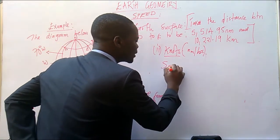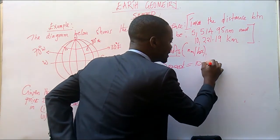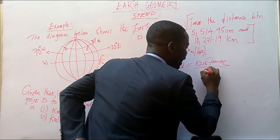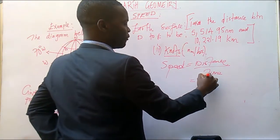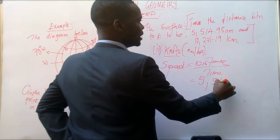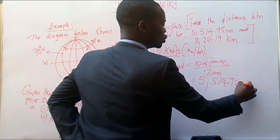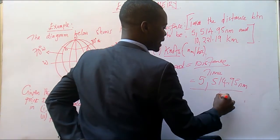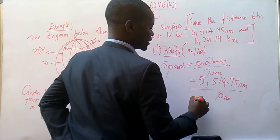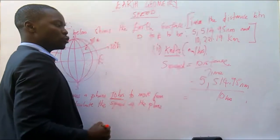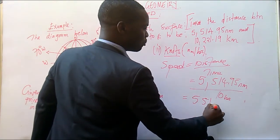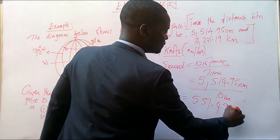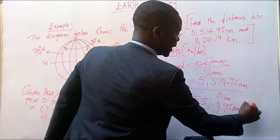So now, speed is equal to distance over time. Of which the distance in nautical miles, we have got 5,514.95 nautical miles divided by the time taken, which is 10 hours. So when we divide, what are we going to have? We are going to have 551.495 nautical miles per hour.